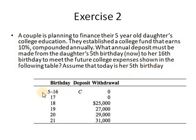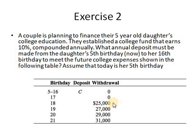From the daughter's fifth birthday till the 16th birthday, a deposit of amount C will be made. The first withdrawal will take place at the daughter's 18th birthday, where the college tuition is $25,000. These amounts will continue to increase by a gradient of $2,000 from year 18 till year 21. We need to find the amount C.